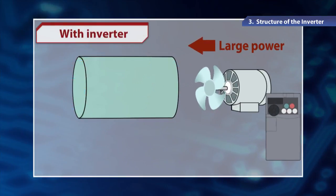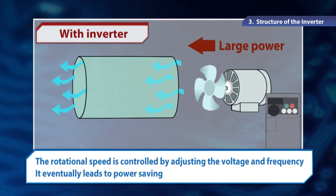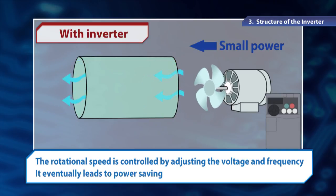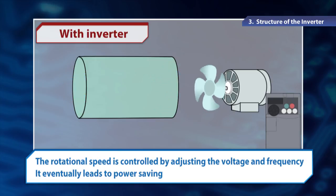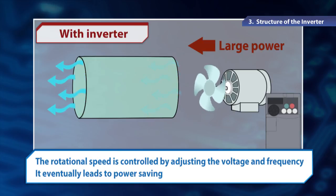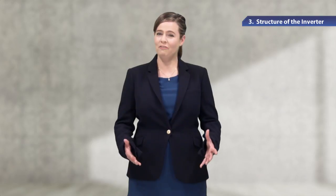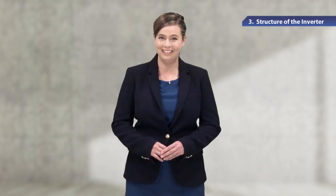With an inverter, the fan rotation can be adjusted to supply the necessary amount of air. It allows us to save on power consumption by adjusting the voltage and frequency and rotate the motors efficiently. The inverter has the advantage of being convenient as well as energy-saving.